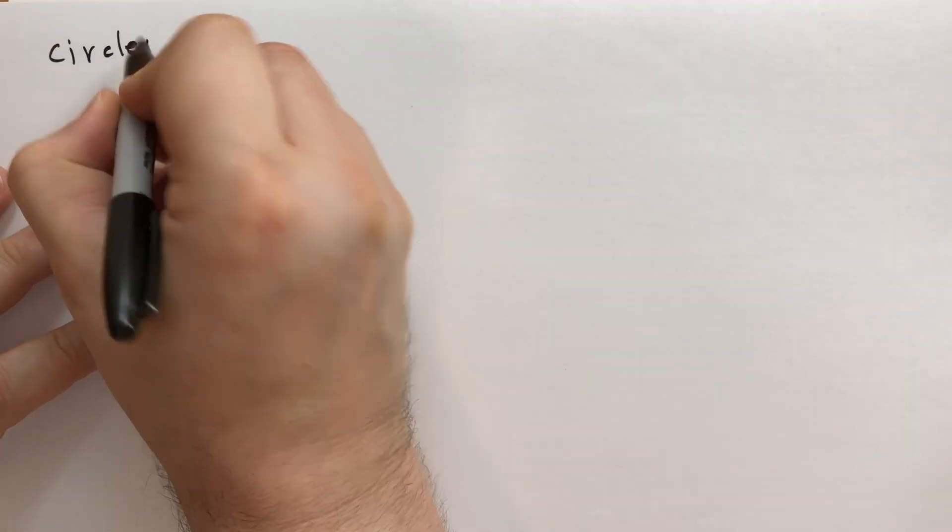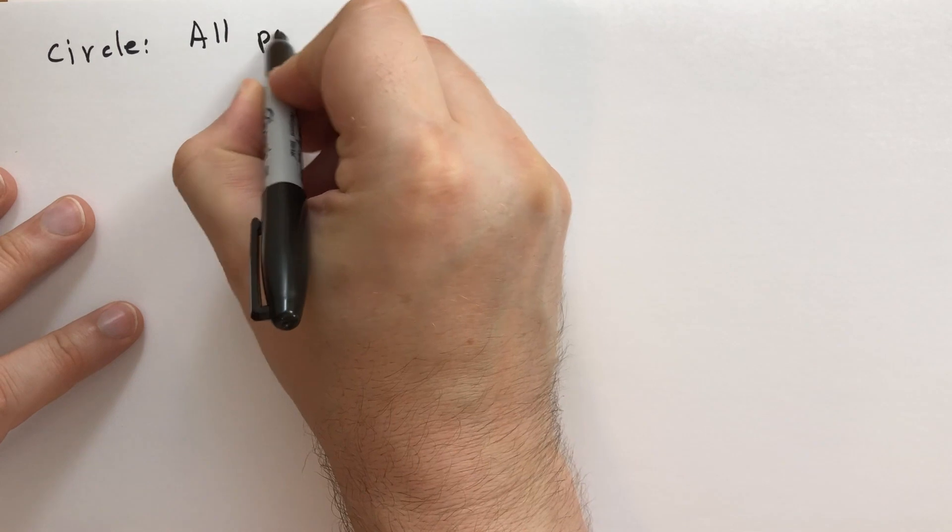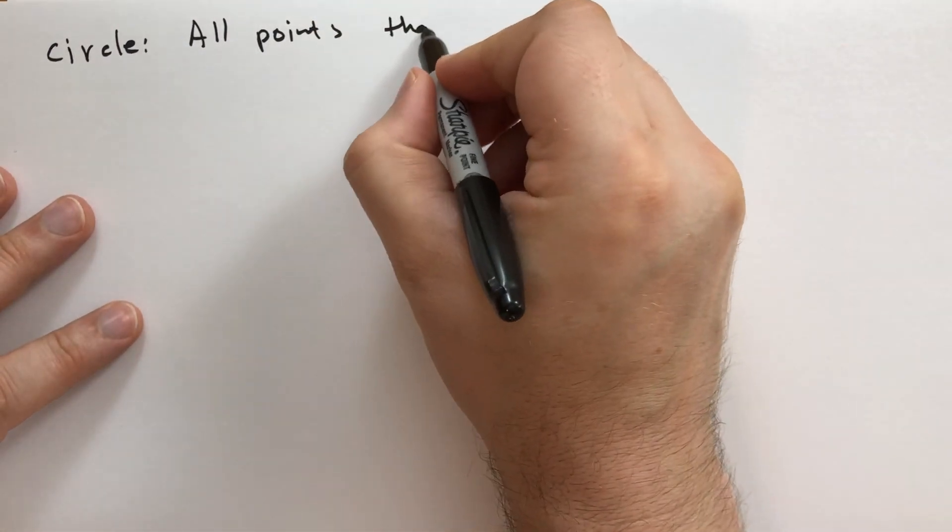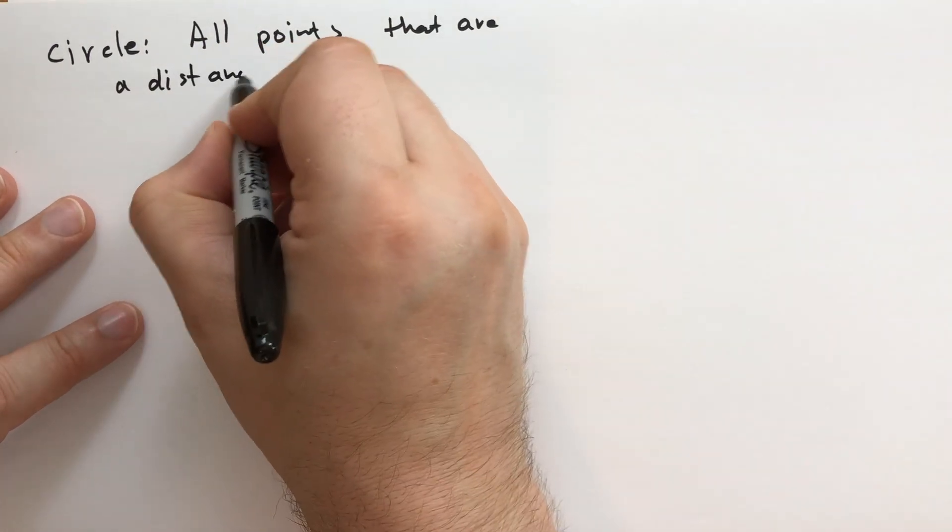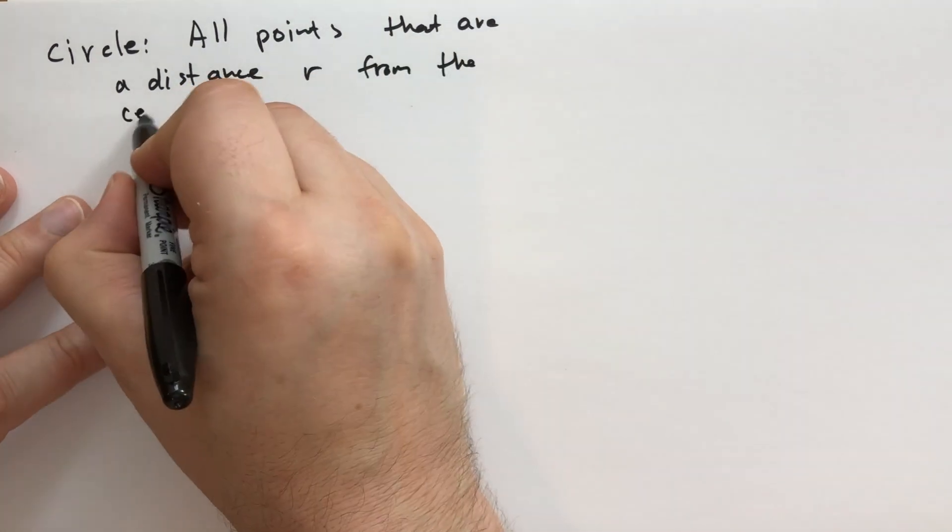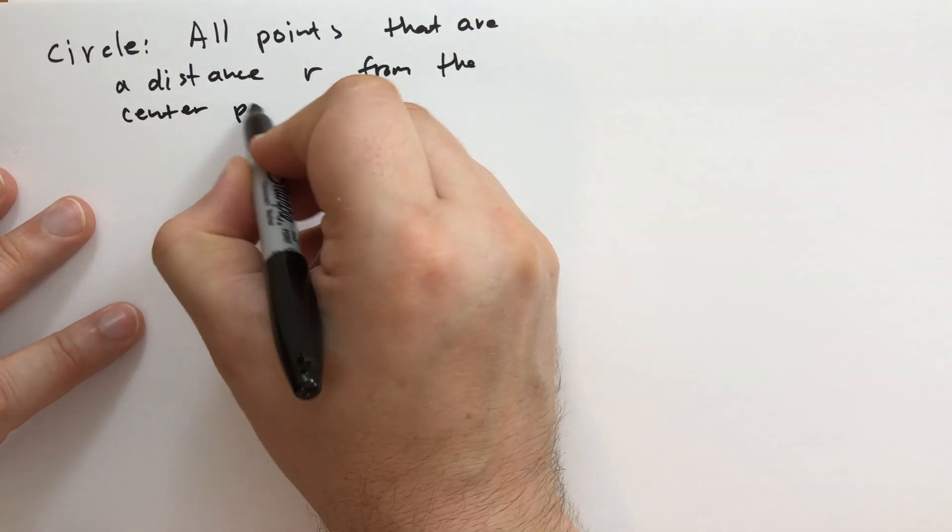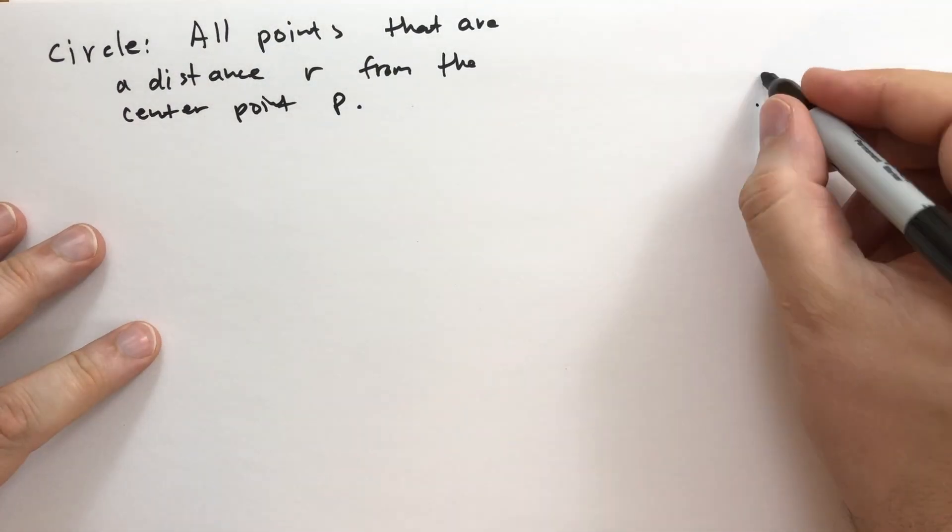Last thing we want to talk about with distance is having to do with circles. Circles and distances are fundamentally tied together. What is a circle? You guys know what a circle is, but we'll tell you a circle with a formal mathematical definition here. A circle is all points that are a distance R from the center point P.